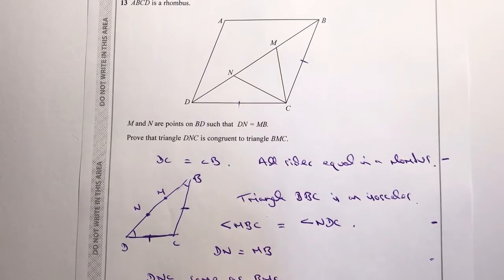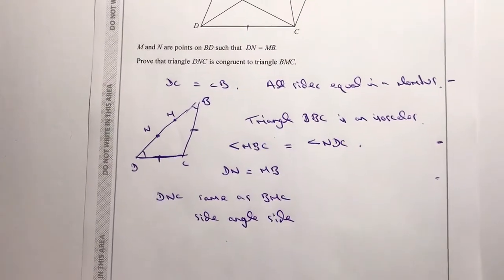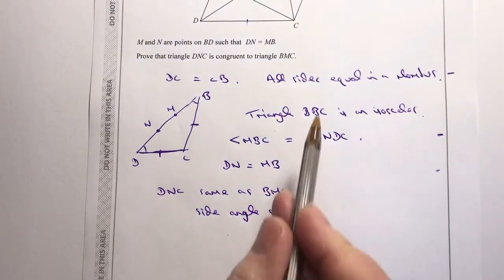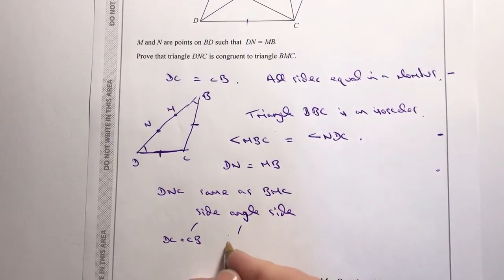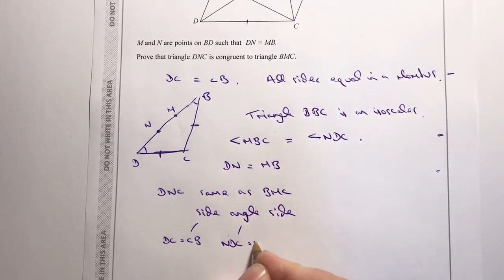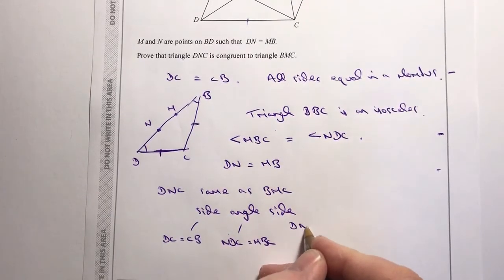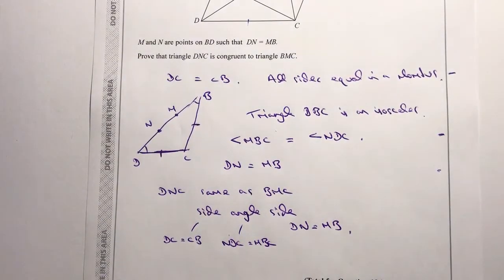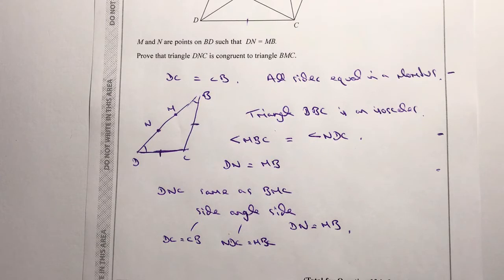We've got three conditions, proving that triangle DNC is congruent to triangle BMC by Side-Angle-Side (SAS): the side DC equals CB (all sides equal in a rhombus), the angle NDC equals MBC (base angles of the isosceles triangle), and the side DN equals MB (given in the question). Congruency just takes a little time to work through, but you want to prove three criteria to confirm both triangles are congruent.